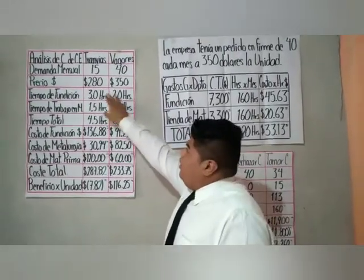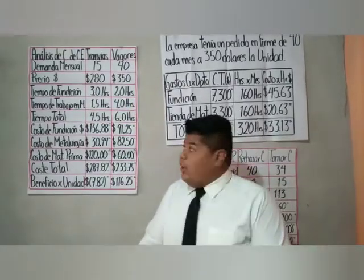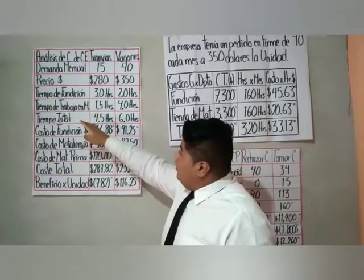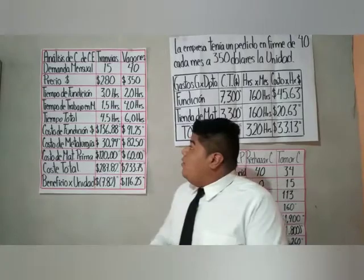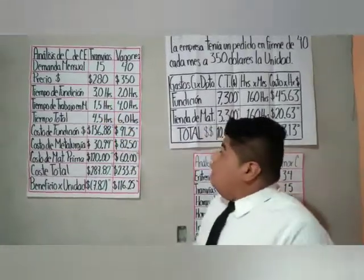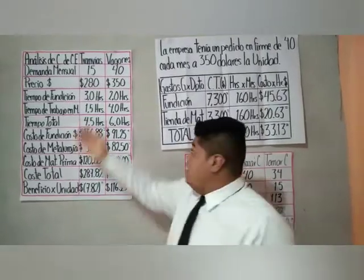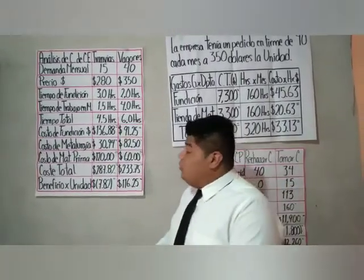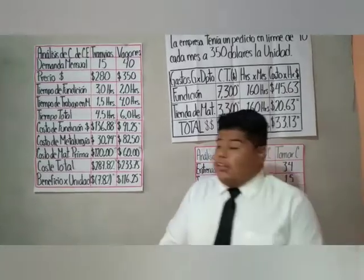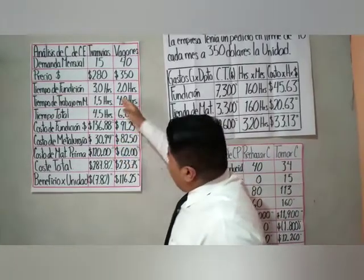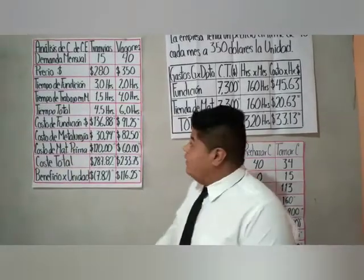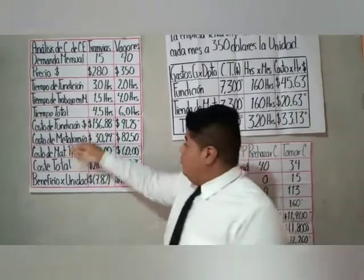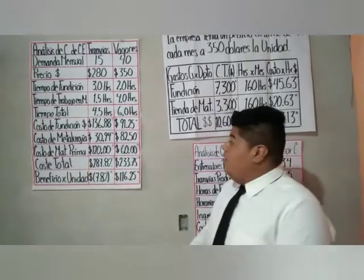El precio por unidad es de $280 para tranvías y $350 para vagones. El tiempo de fundición para tranvías es de 3 horas y para vagones 2 horas. El tiempo de trabajo en metalurgia es de 1.5 horas para tranvías y 4 horas para vagones. El tiempo total es la suma de fundición y metalurgia: 4.5 horas para tranvías y 6 horas para vagones. Los costos por unidad incluyen fundición, metalurgia y costo de materia prima.